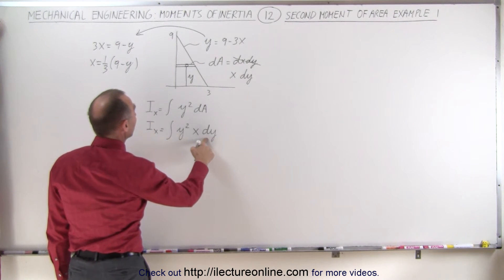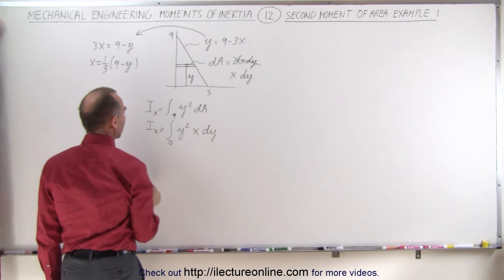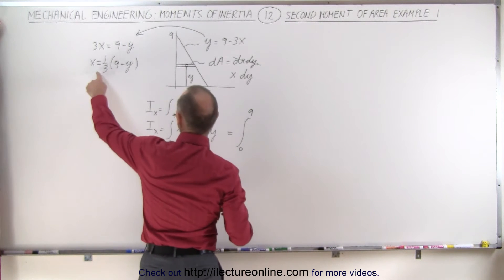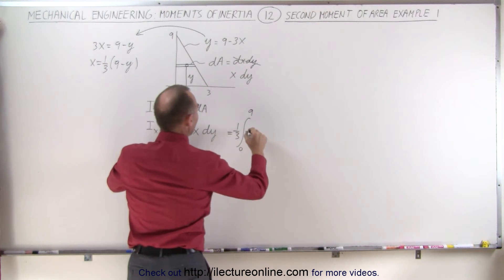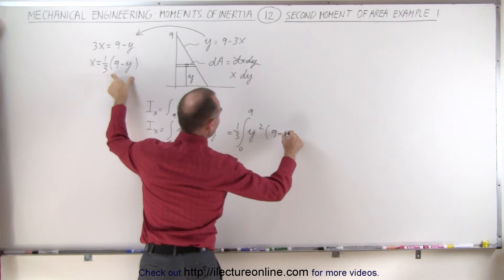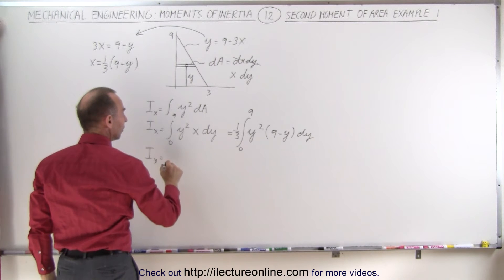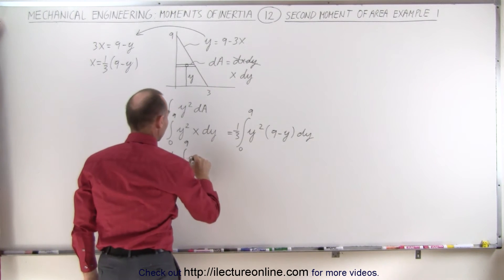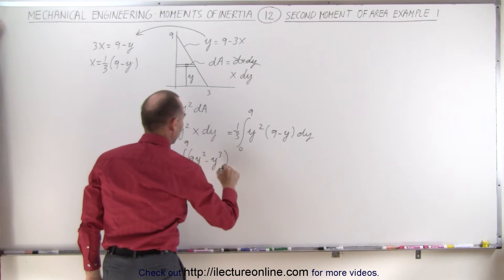Limits of course when we integrate over dy that's from 0 to 9. So this would be equal to the integral from 0 to 9. We have a one third here when we plug that into x so we'll put that in front, one third times y squared, and what we have left is the quantity 9 minus y dy, which can then be written as one third times the integral from 0 to 9 times 9 y squared minus y cubed all times dy.